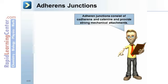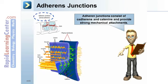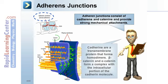Adherence junctions consist of cadherins and catenins, and provide strong mechanical attachments. Cadherins are transmembrane proteins that form homodimers. Beta-catenin and alpha-catenin form a complex with the intracellular portion of the cadherin molecule.